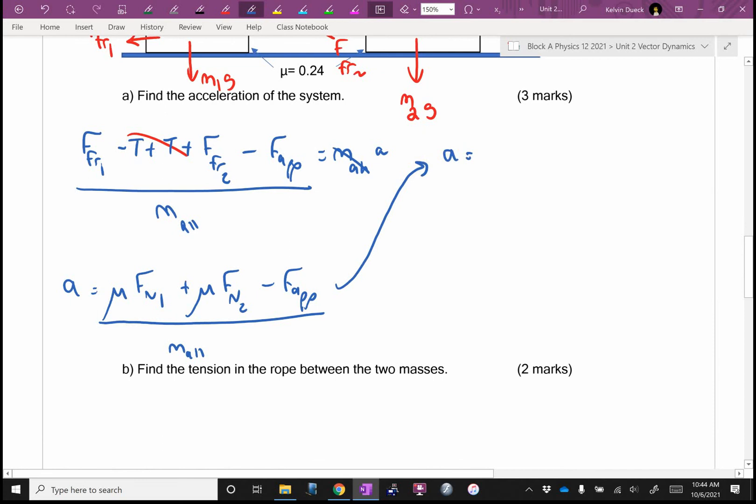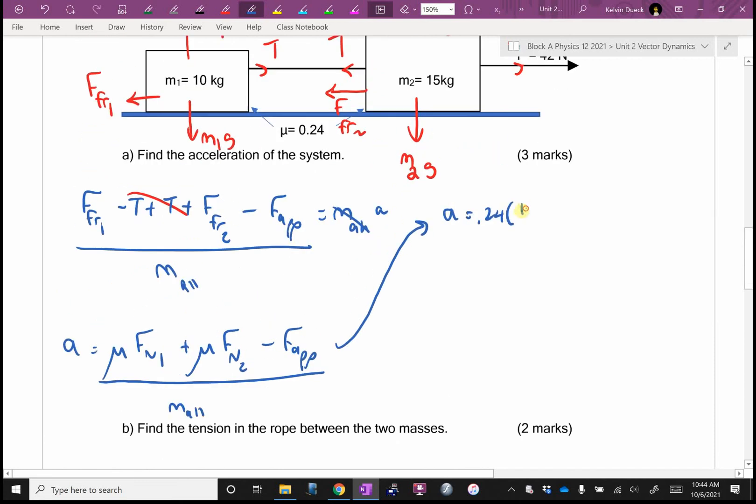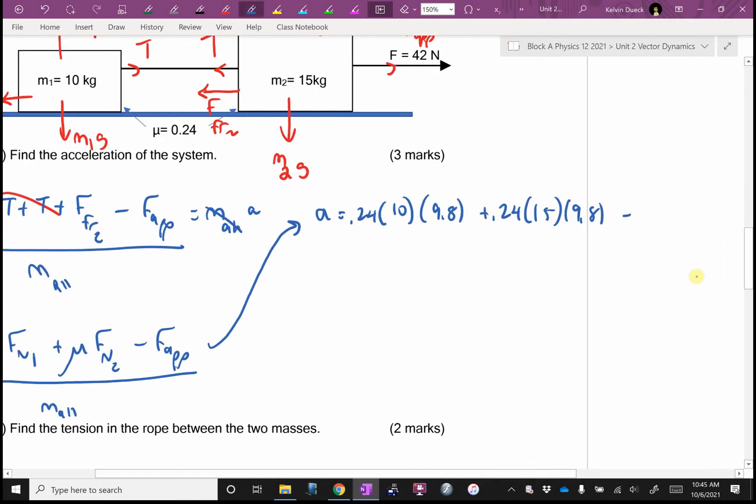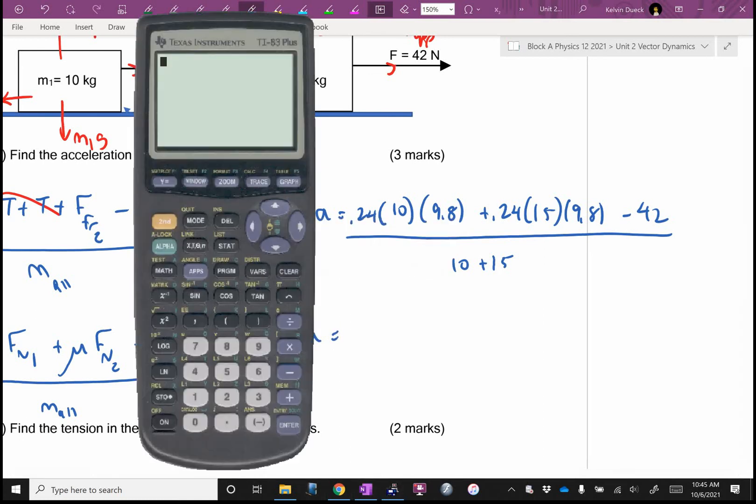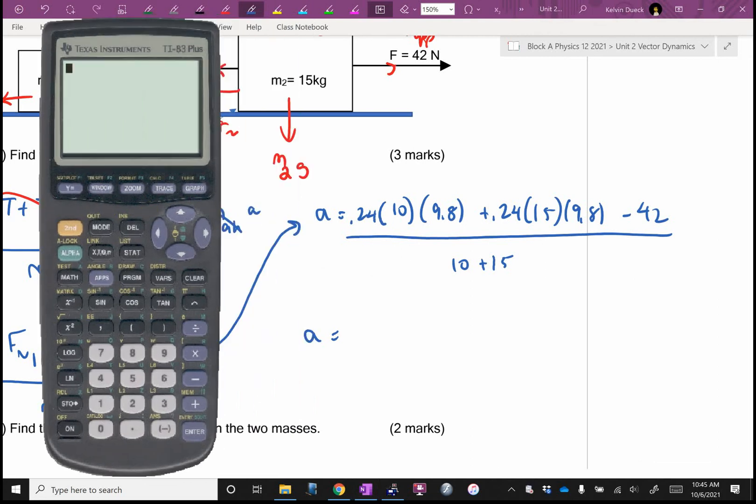So A is going to be, what's mu? I don't know what's mu with you. It's going to be 0.24 times M1, 10, times 9.8, plus 0.24 times 15, times 9.8, minus 42, all divided by 10 plus 15. Is there a built-in error check? Do I know this answer is going to be less than 9.8? Nothing vertical here, so I can't make that assumption. Probably less because that's a pretty big acceleration, but I can't assume that.